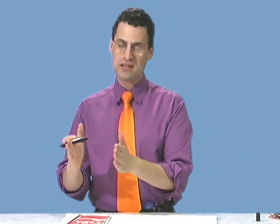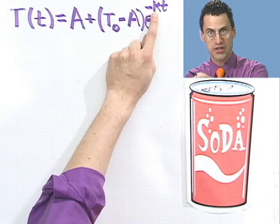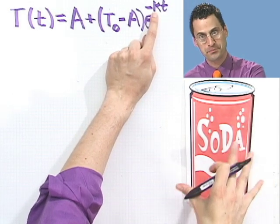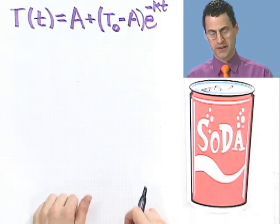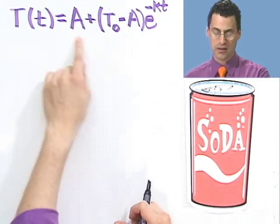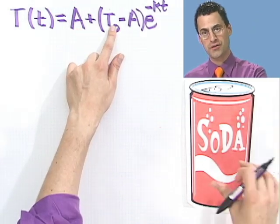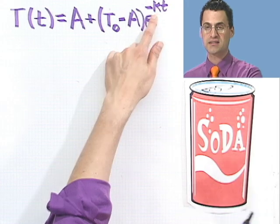Now, K is some constant that depends upon the object you're putting in. In this case, it's a soda. And so that constant depends upon the can. Is it aluminum? Is it plastic? Whatever, and so on. So actually, that constant is determined heavily by the object itself. So we don't know what that is. That's sort of a mystery thing right now. But if you want to find the temperature after T minutes, you plug into this formula, where this is the temperature of the ambient space, this is the initial temperature of the object, and K is this constant.